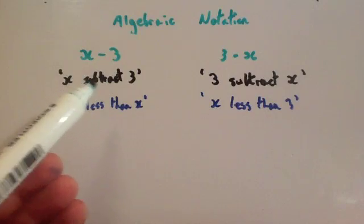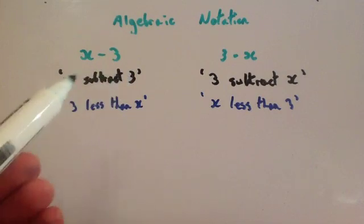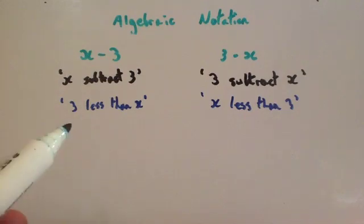The word subtract could also read minus or take away. So it could be x minus 3, x take away 3. It means you're going to take 3 away from x, so you're going to be 3 less than x.